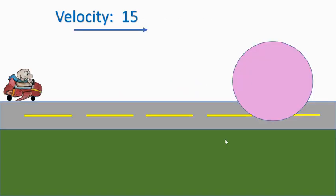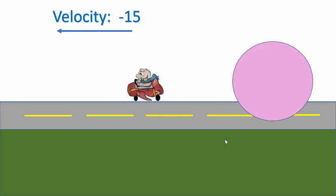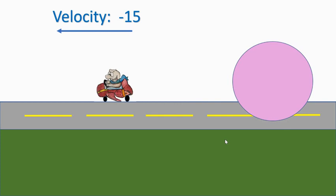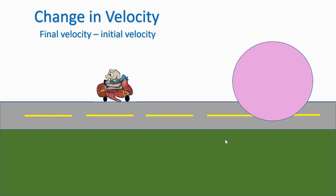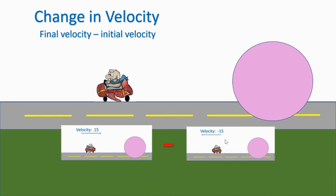Changing direction — the character runs through a ball and the ball bounces him backwards. His speed was 15 the entire time, both before and after. Does that mean his change in velocity was zero? That's not how the math works out. Before he hit the ball his velocity was positive 15; afterwards it was negative 15. So final minus initial: negative 15 minus positive 15 equals negative 30.